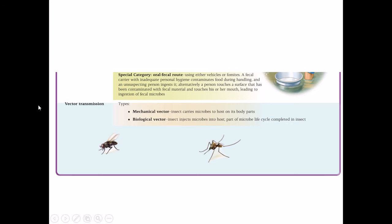We also have vector transmission, which typically refers to animal-based transmission, but we can have a mechanical vector. When we think of a mechanical vector, the pathogen is being carried on the surface of the organism. When we have a biological vector, the organism injects the pathogen into your body.